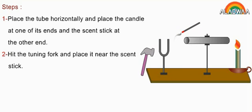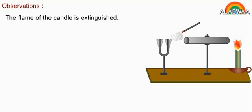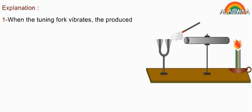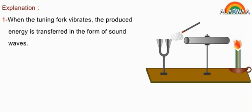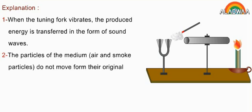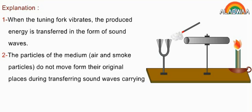Hit the tuning fork and place it near the scent stick. Observation: the flame of the candle is extinguished. Explanation: when the tuning fork vibrates, the produced energy is transferred in the form of sound waves. The particles of the medium — air and smoke particles — do not move from their original places during transferring sound waves carrying energy to the candle flame.